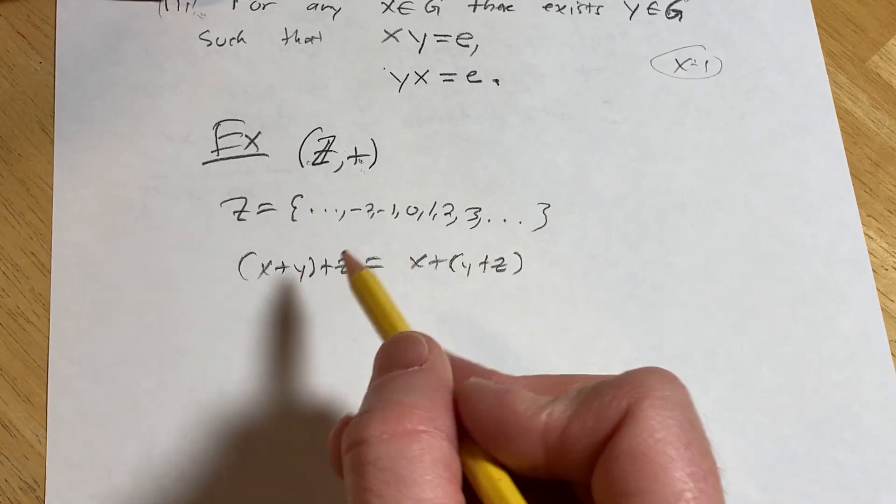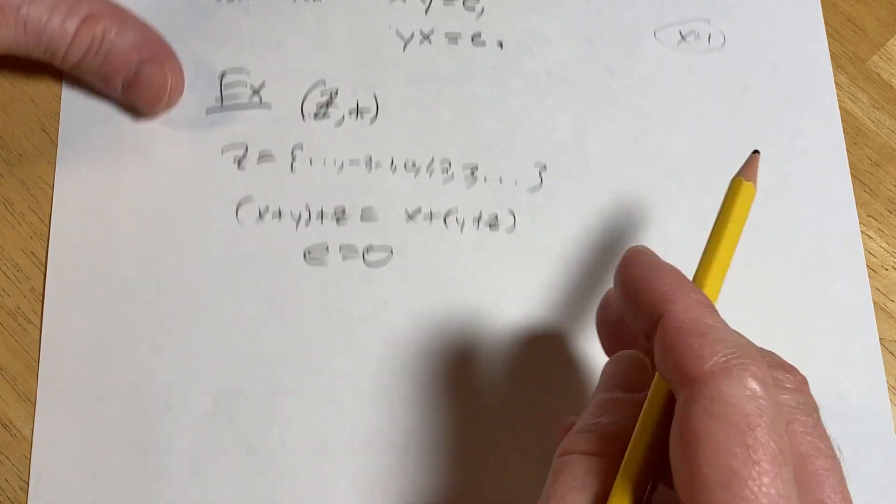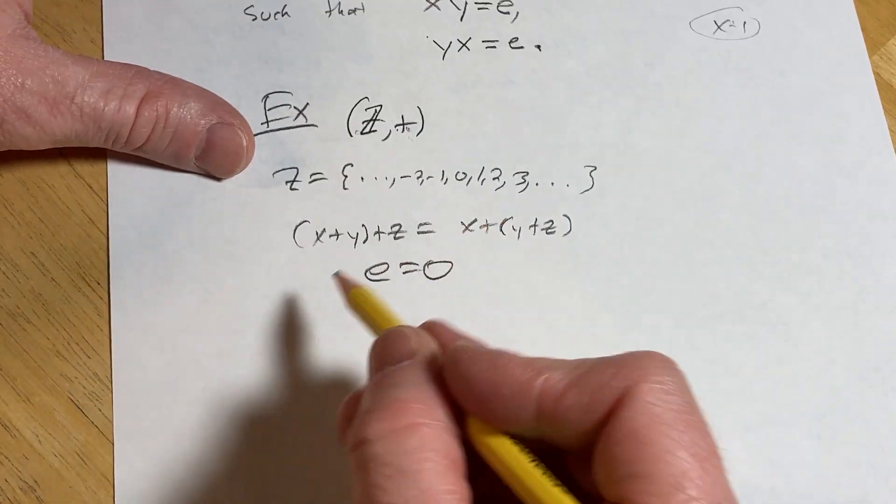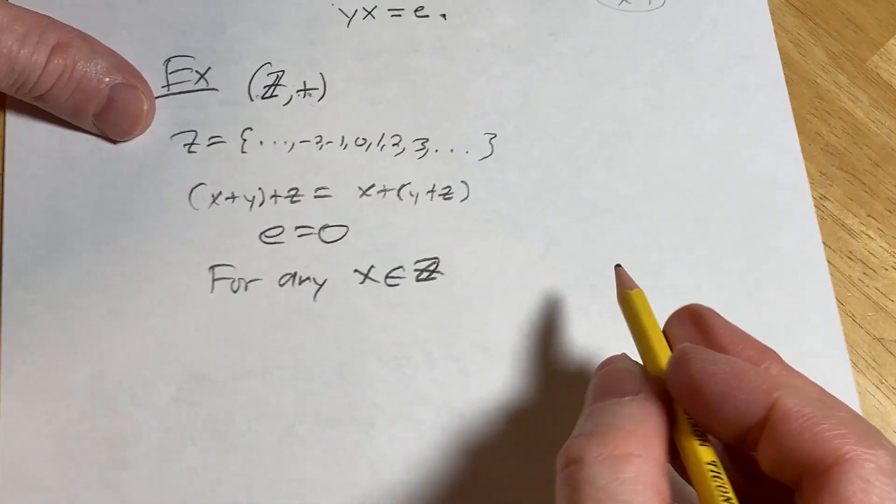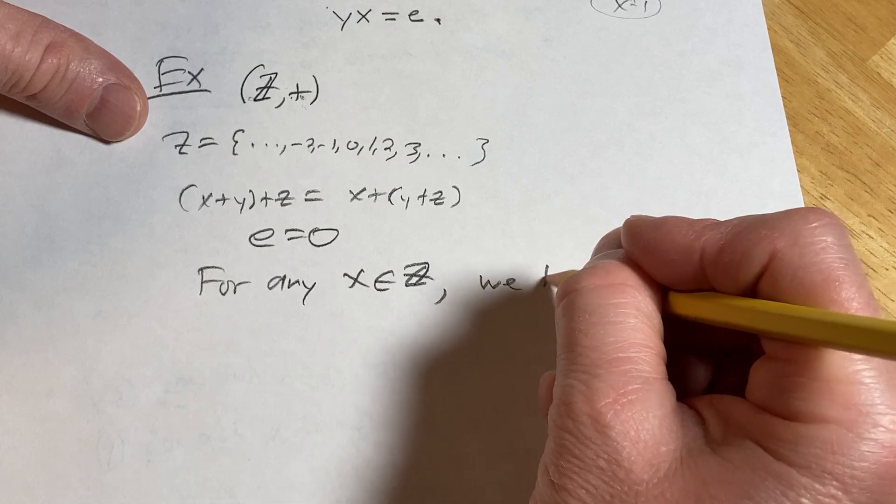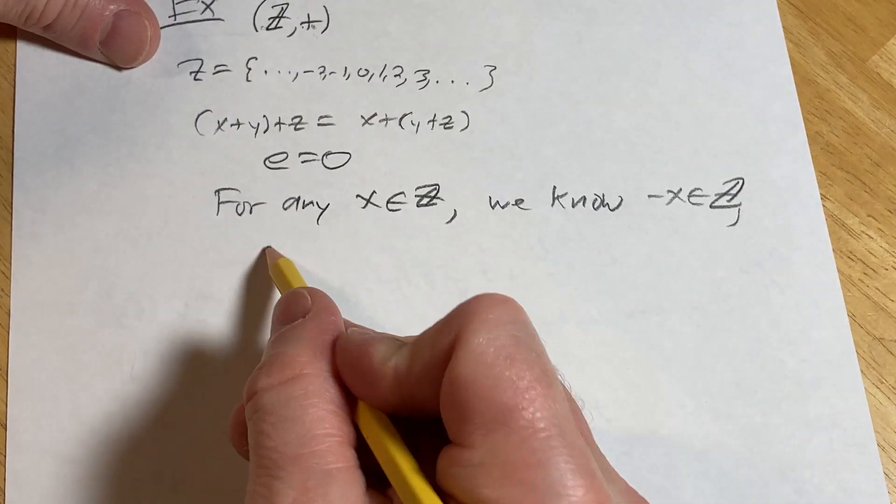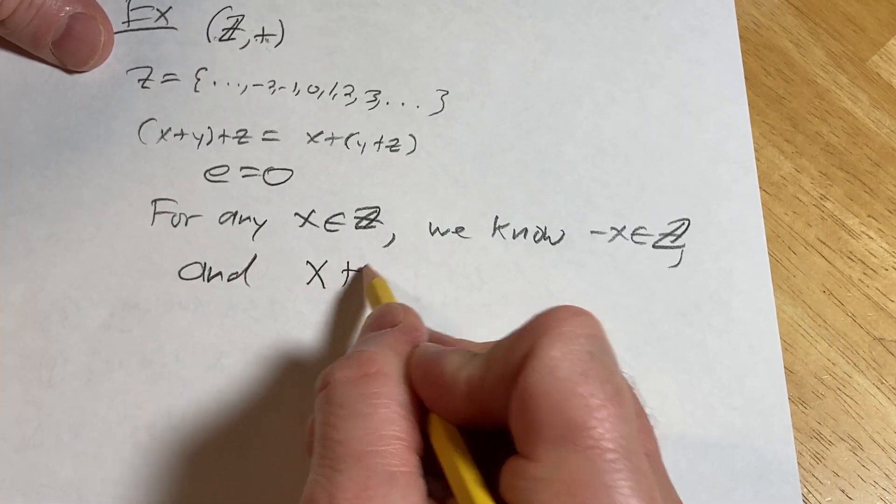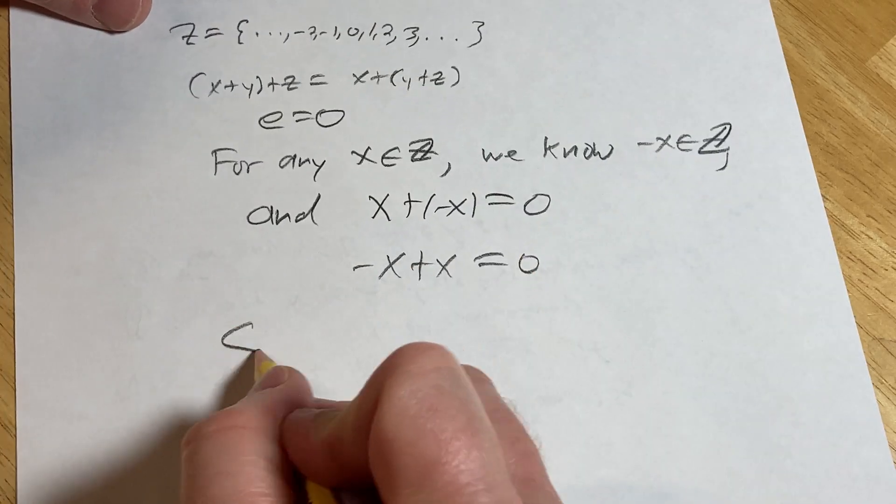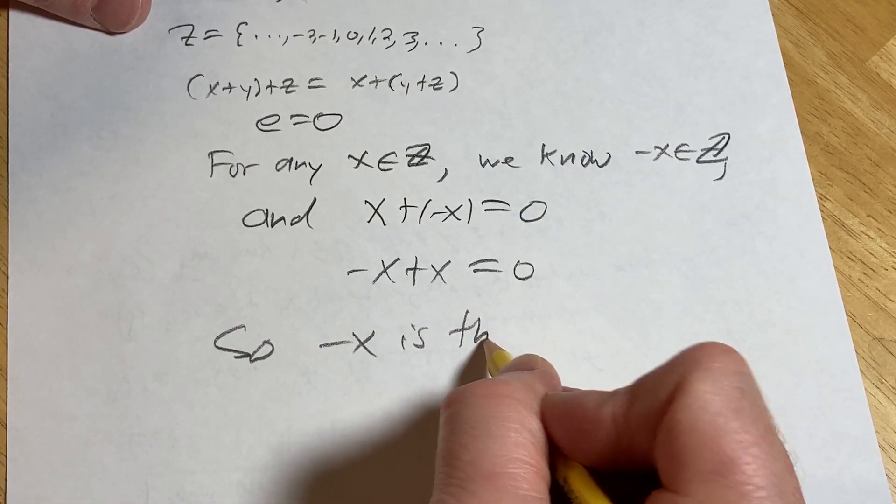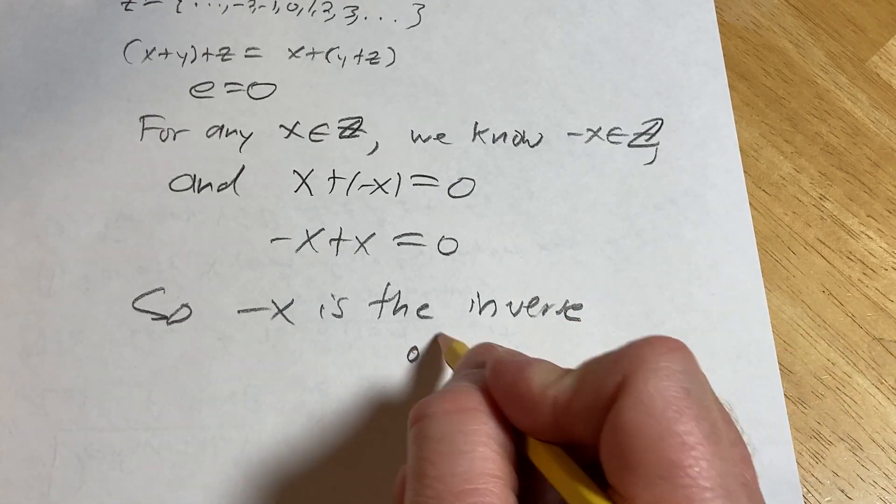The identity element is 0. So e equals 0. Instead of star, you have the plus sign. And the inverse is just minus. For any x in Z, we know minus x is in Z. And if you do x plus minus x, you get 0. If you do minus x plus x, you get 0. So minus x is the inverse of x.